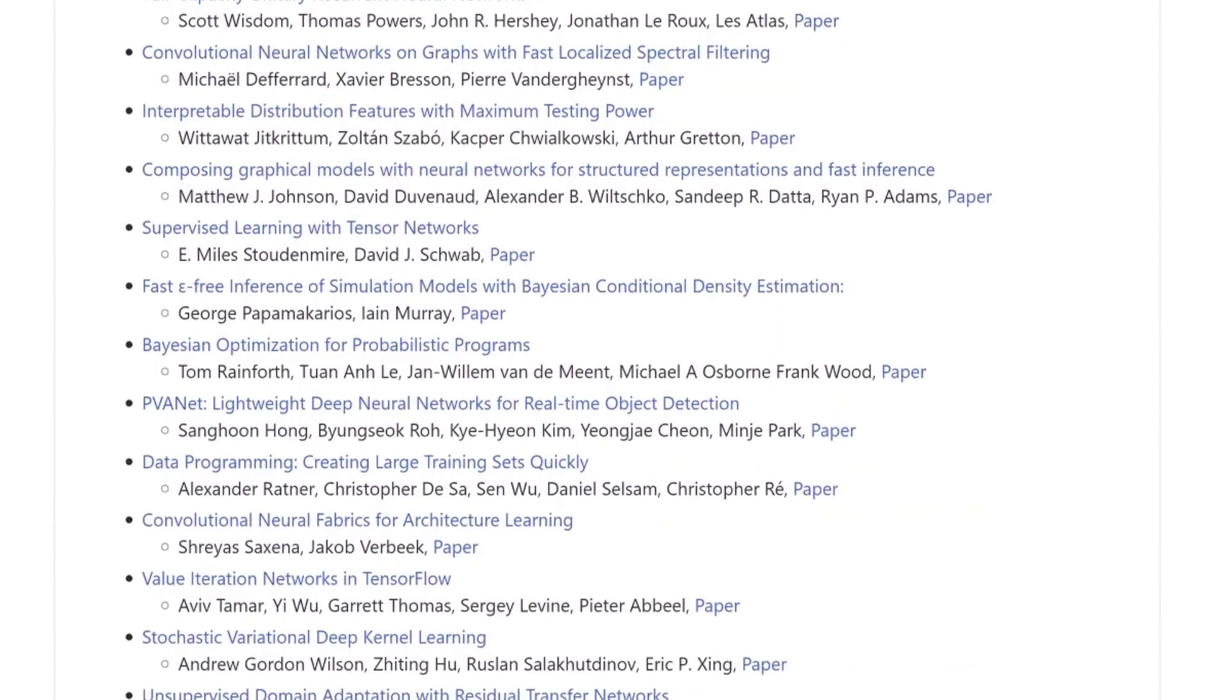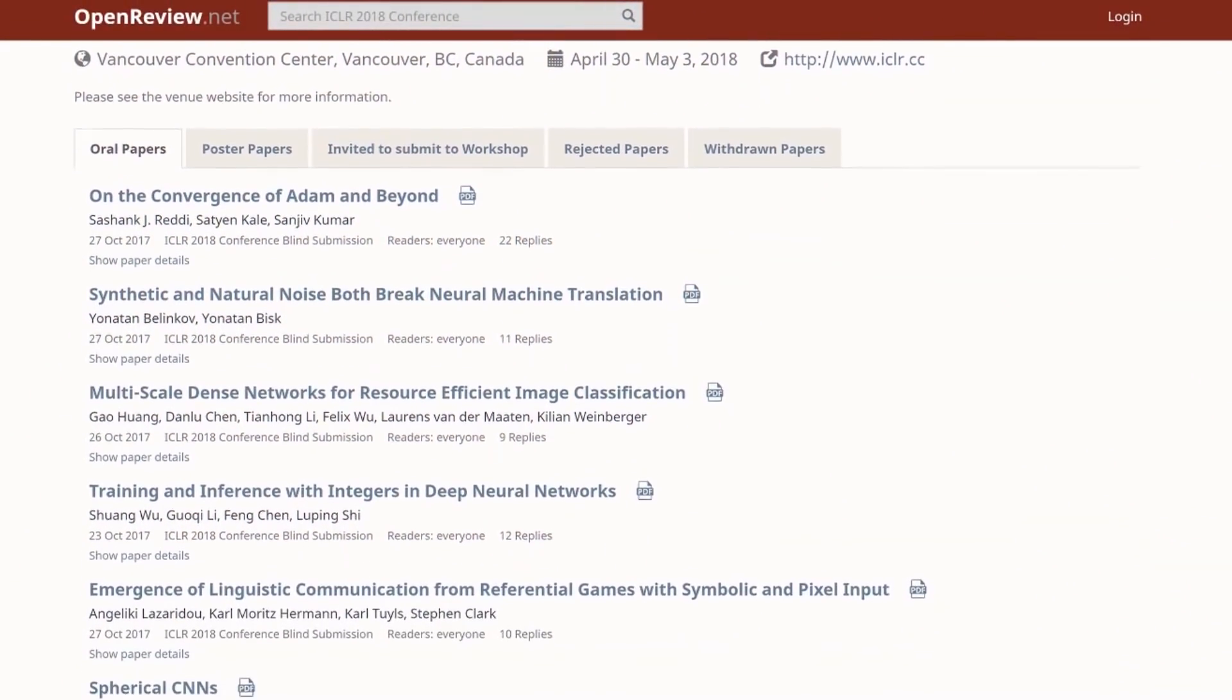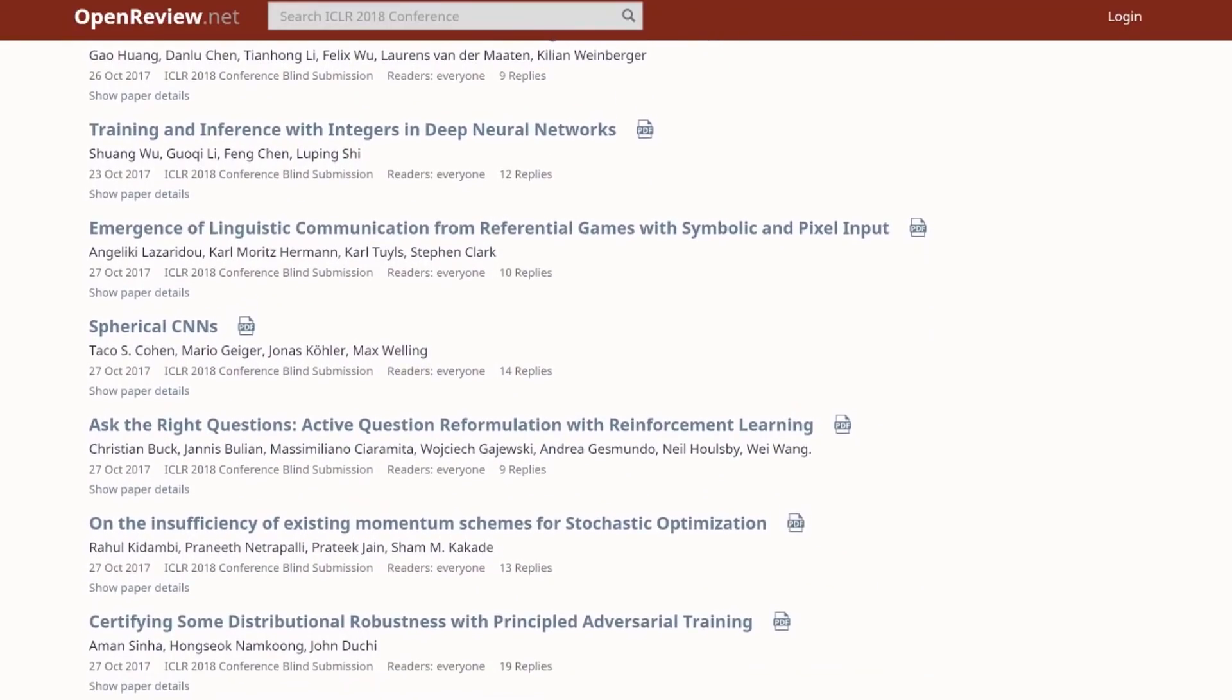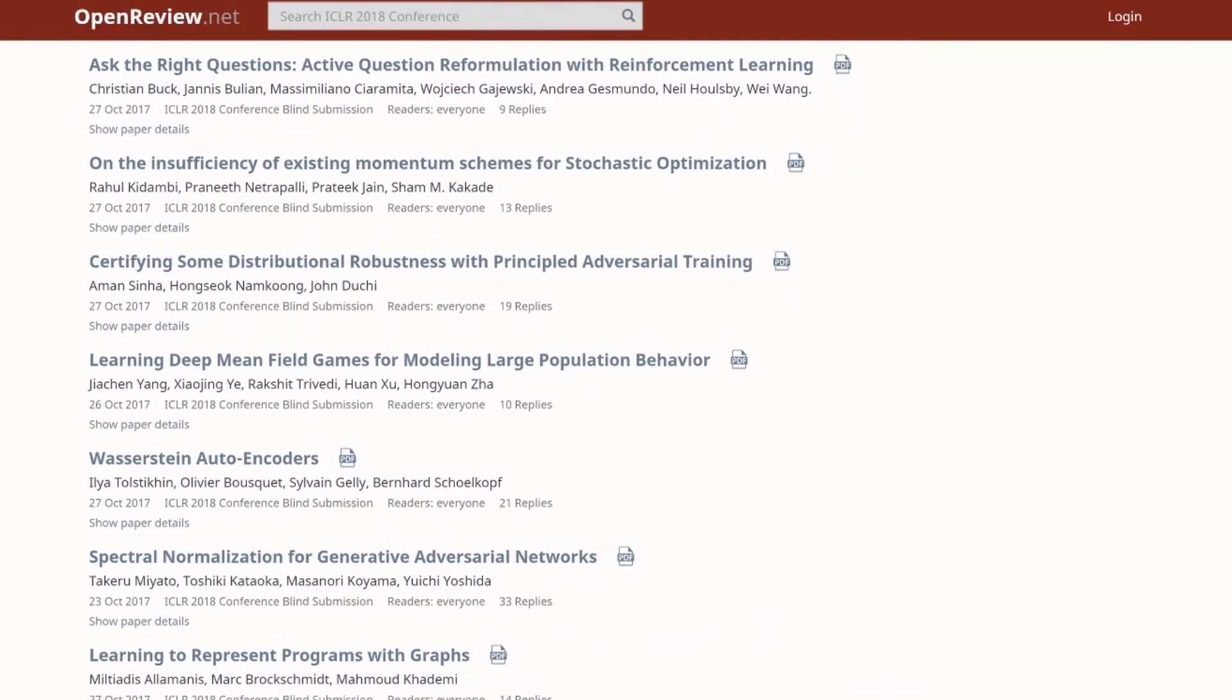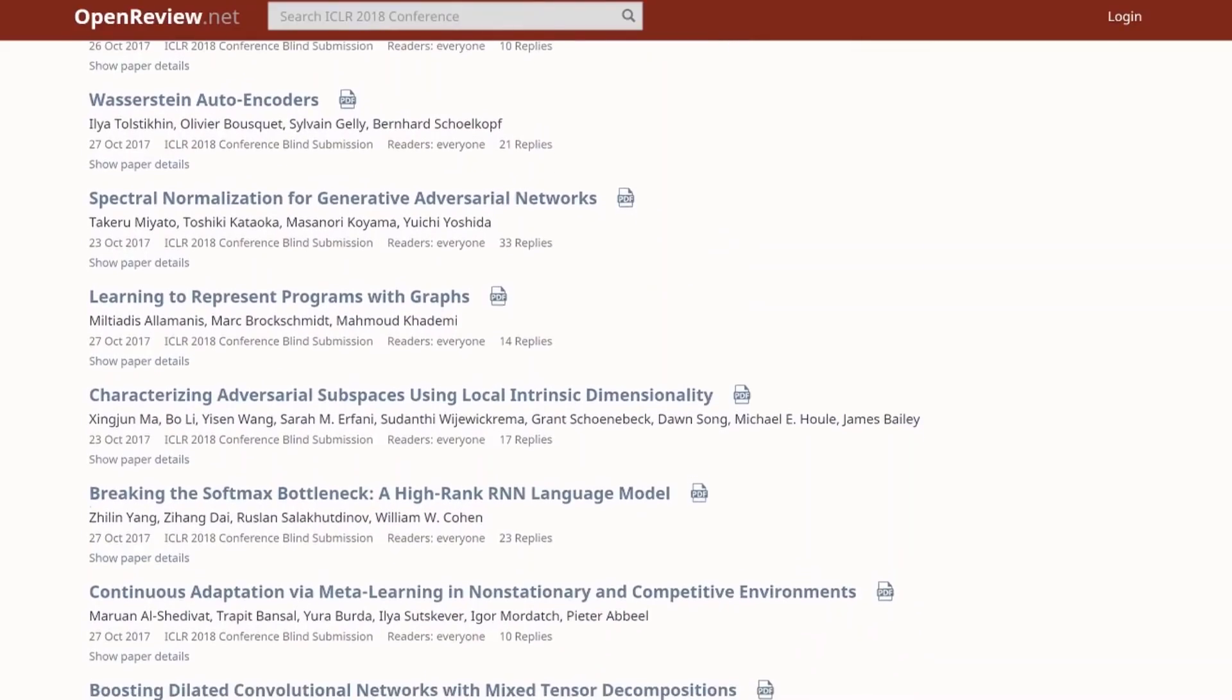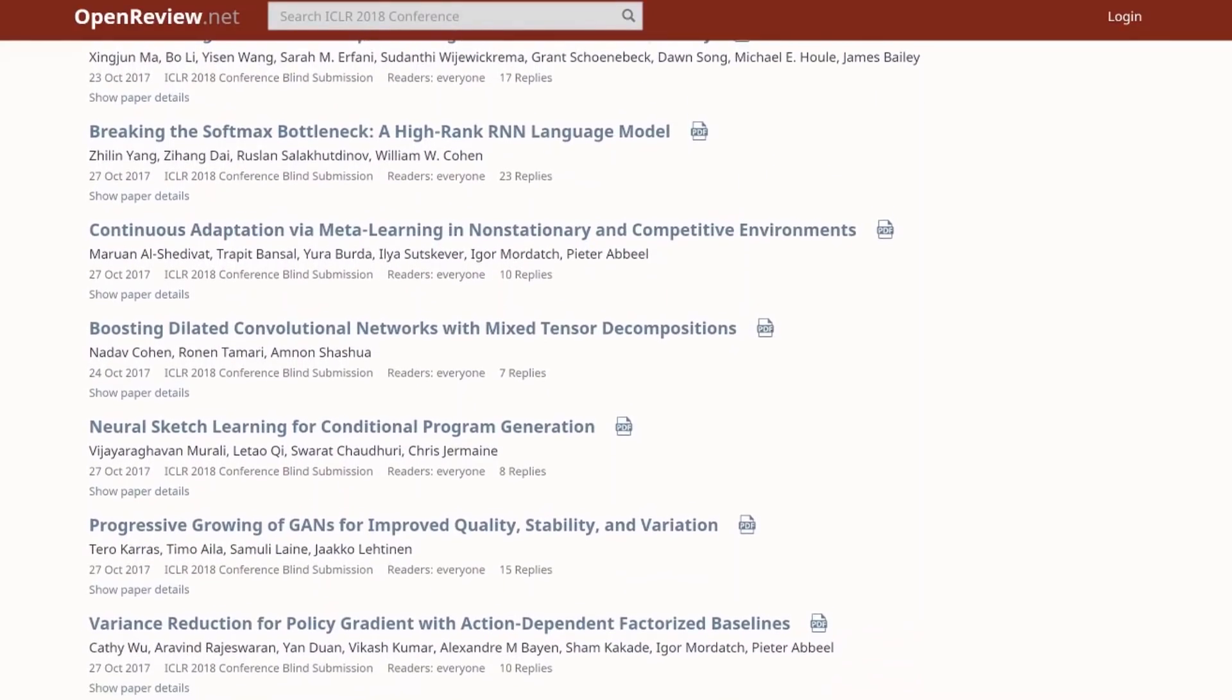I tend to look for papers with an industry focus. A lot of papers from academia are cryptic and lacking in detail. Some, intentionally so, because their goal is to publish as many papers as possible that look good on the surface. Industry-focused papers have real-life applicability, so they are easier to reproduce.